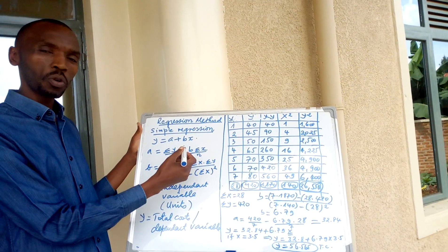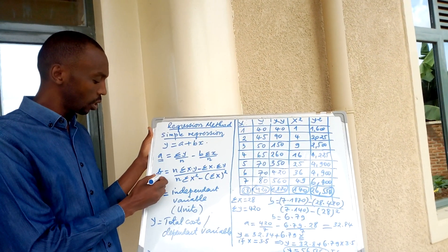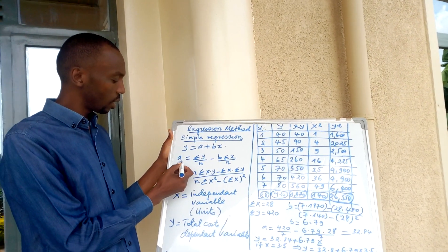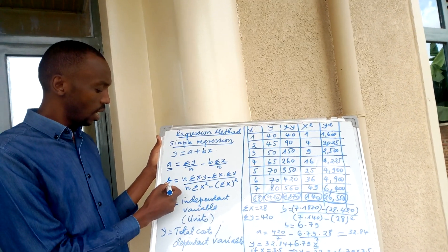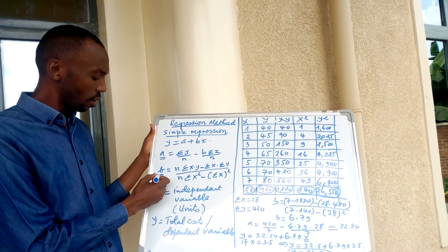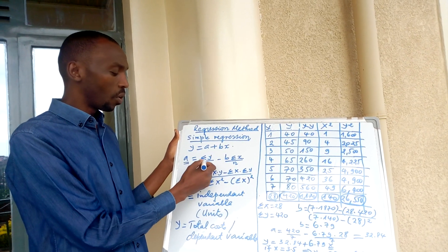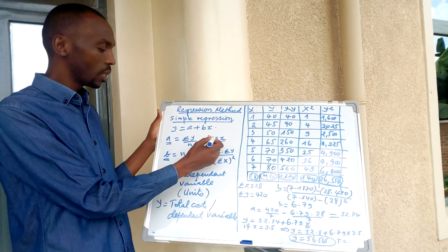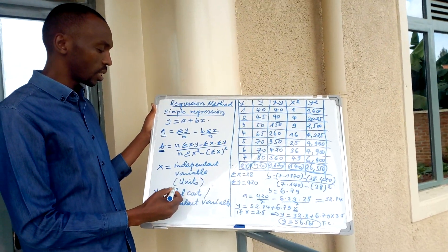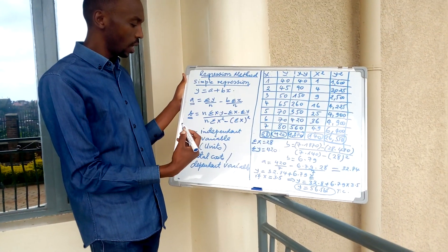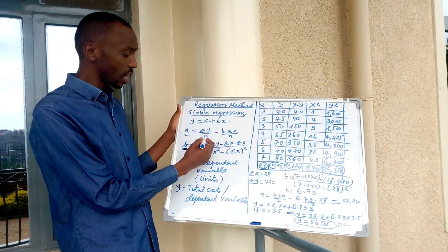If you want to determine the total cost using the regression method, you need to calculate both a and b. Even though a is a constant, it still needs to be calculated. Our a will be equal to the summation of y divided by n, minus b times the summation of x divided by n. Here y is the total cost we are predicting from the historical situation, and n is the number of years of observation.